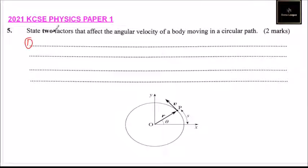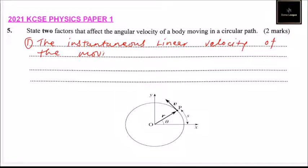One, the instantaneous linear velocity of the moving body. And two, the other factor is radius of the circular path.